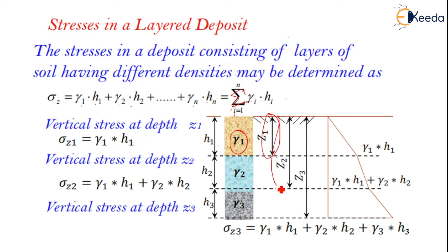At Z2 depth it is equal to gamma 1 H1 plus gamma 2 H2. The stress at the depth Z3 is equal to gamma 1 H1 plus gamma 2 H2 plus gamma 3 H3. The variation is accordingly drawn here. Thank you.